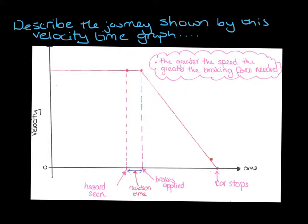Let's have a look at some of the labels on this graph. At this point here, we saw a hazard in the road. We were driving our car at a constant velocity and we saw a hazard in the road. Then this time here, between the hazard being seen and the brakes being applied, that's our reaction time, and that can vary between drivers.